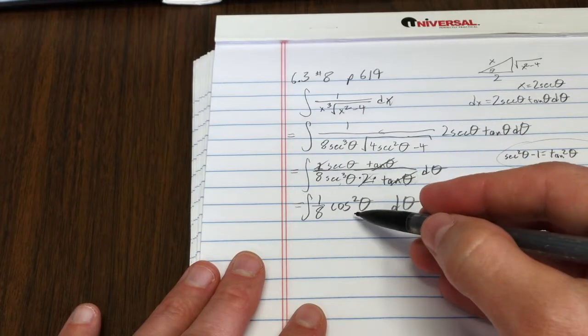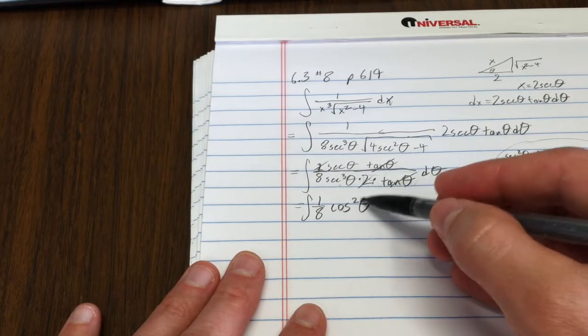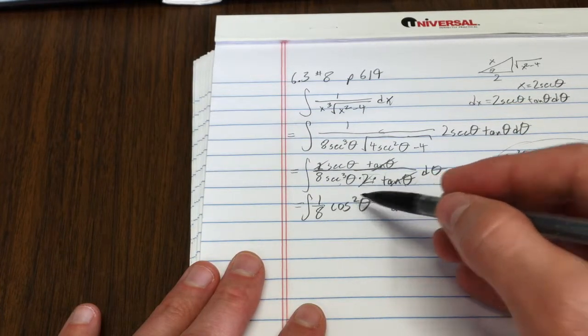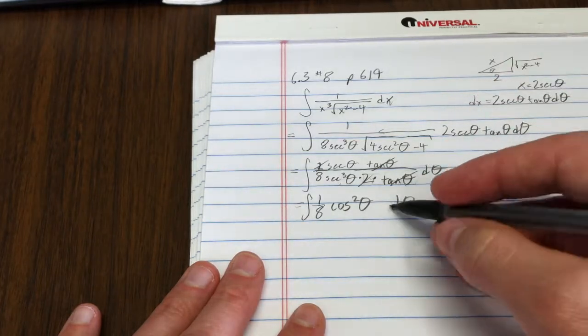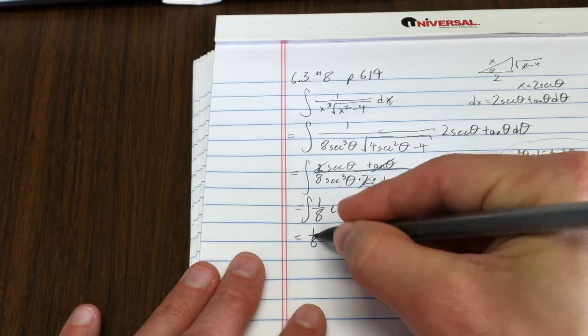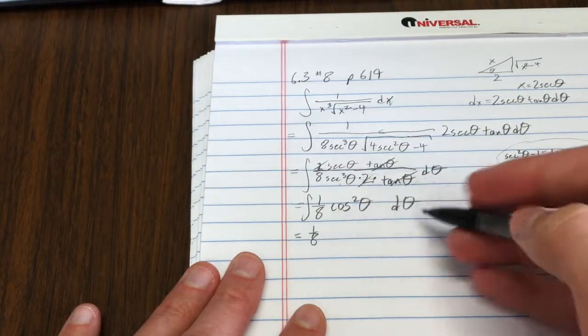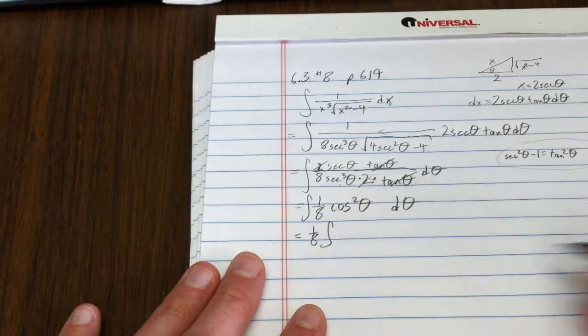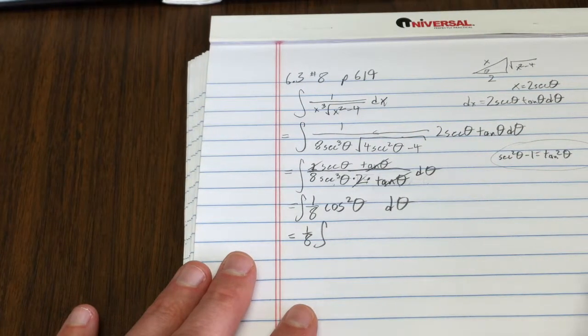This is just a trig integral. I have an even number of powers in the power of cosines. Technically, I have an even number of sines too. I have sine to the 0. So, I have 1 eighth. How do I deal with even powers of trig functions? I'm going to use the double angle identity.